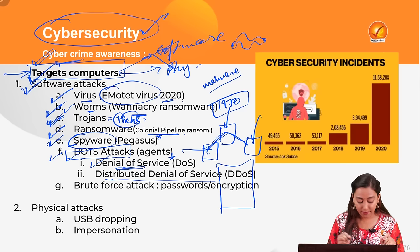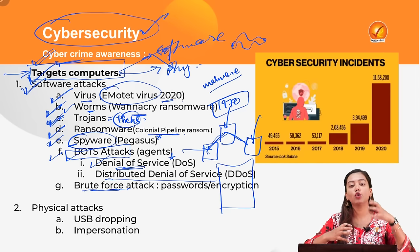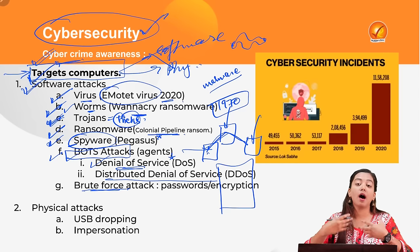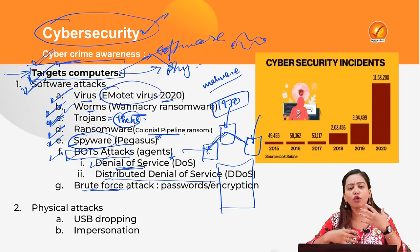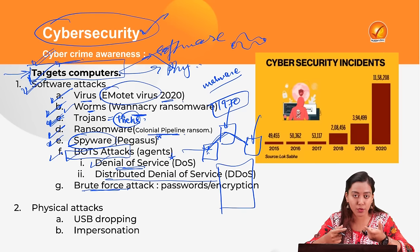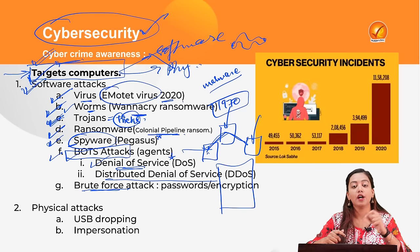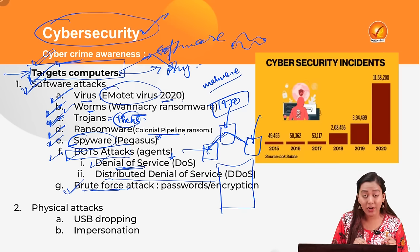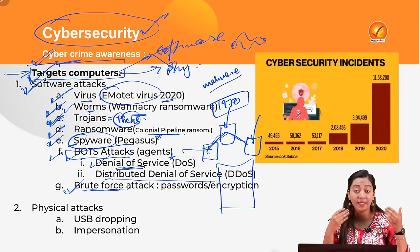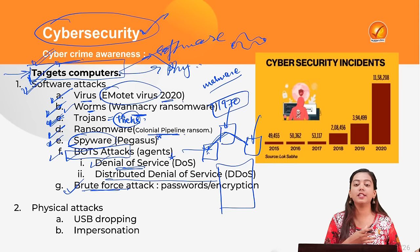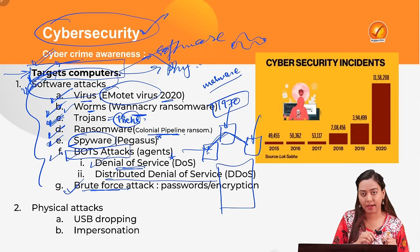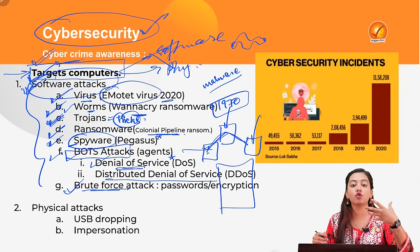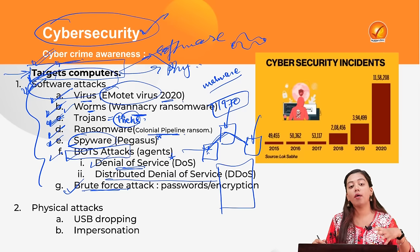Brute force attacks work by trying as many combinations as possible until the password or encryption key is cracked. Software installs itself into a program and tries multiple combinations until it finally hacks the password and steals important files and data. This is a brute force attack — all of these constitute software-based attacks on cyber systems.